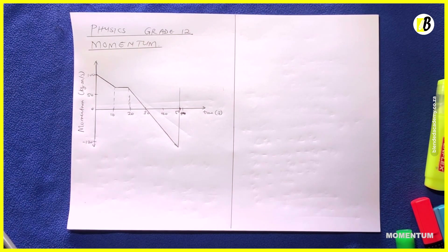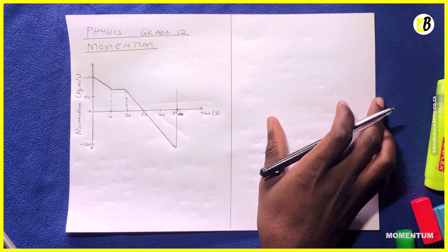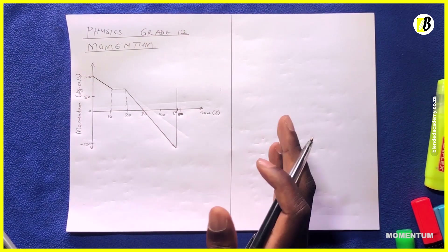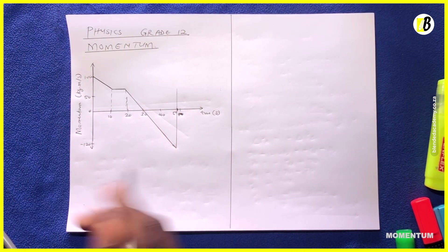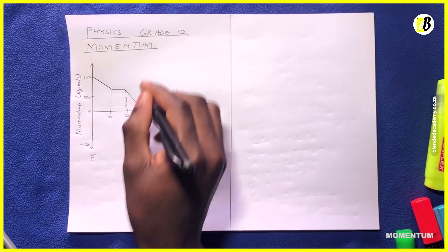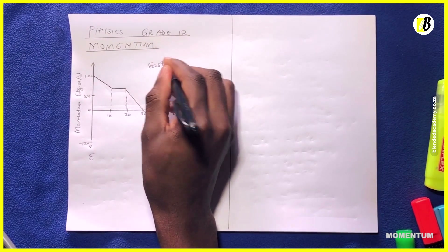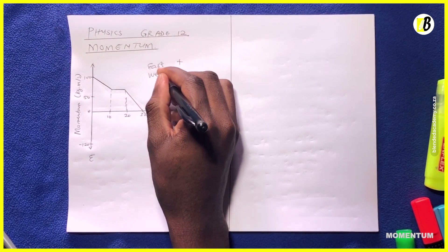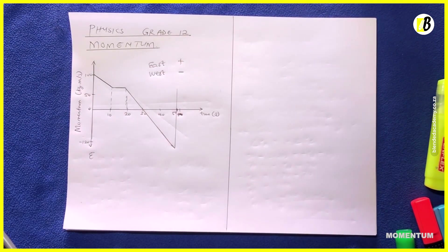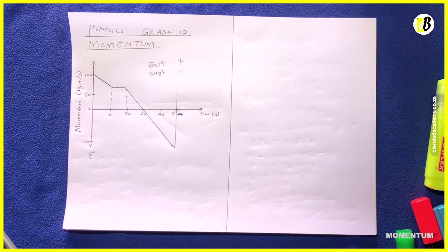In order for us to solve this problem successfully, we need to choose our directions and our signs. Let's take the east direction to be positive — that means west will be negative. So anything moving in the east direction is positive, and any movement towards the west direction is going to be taken as negative. The first question says: write down the definition of momentum in words.